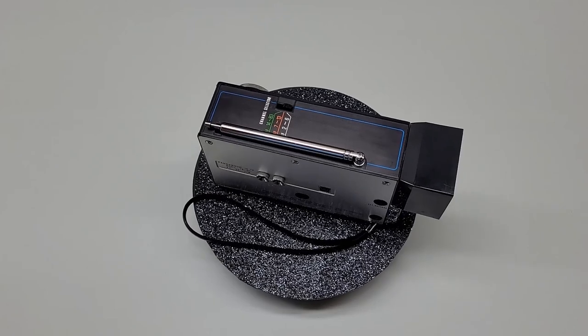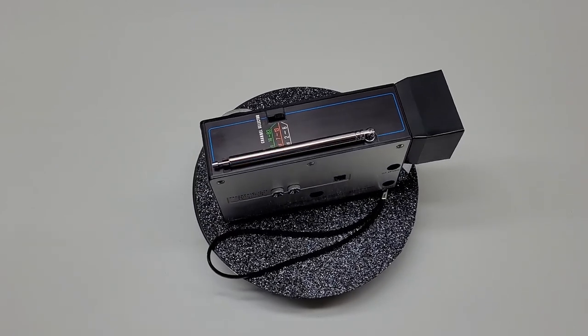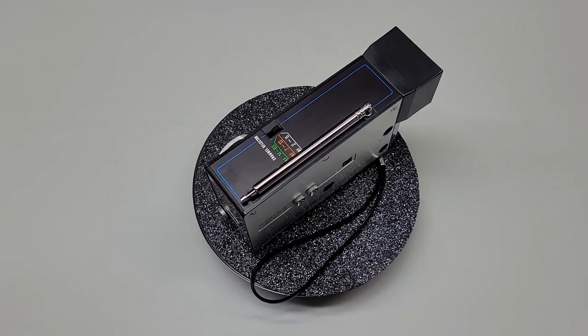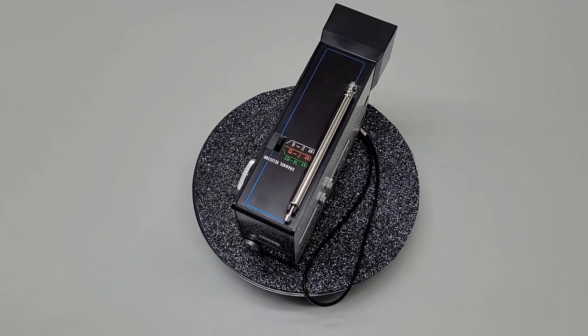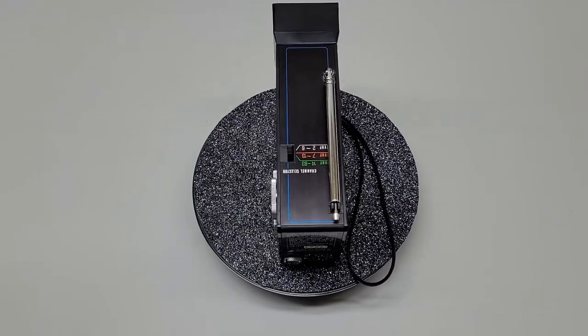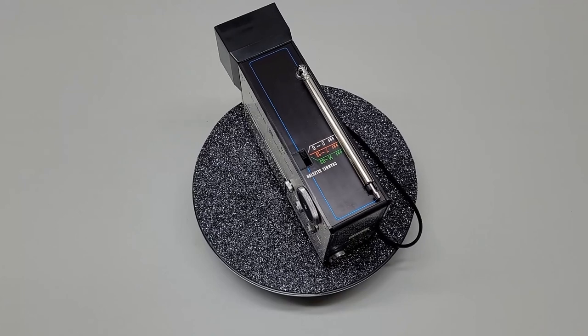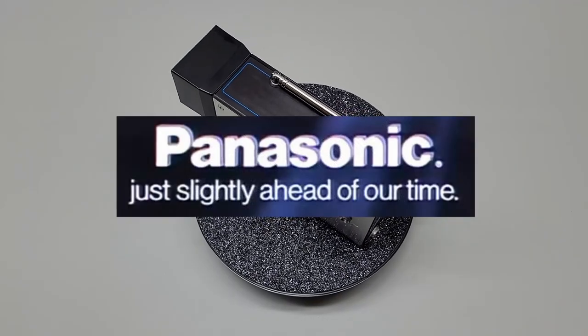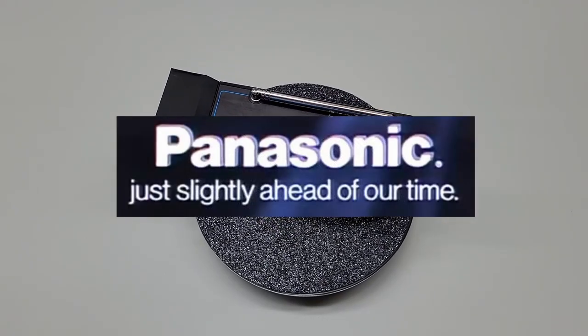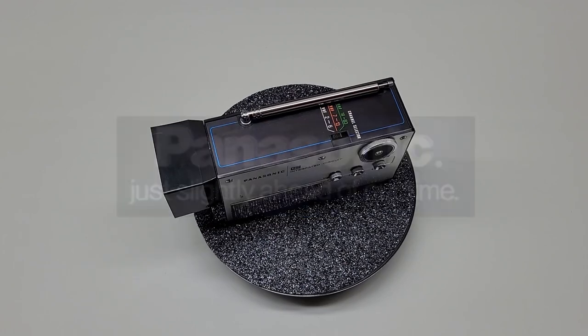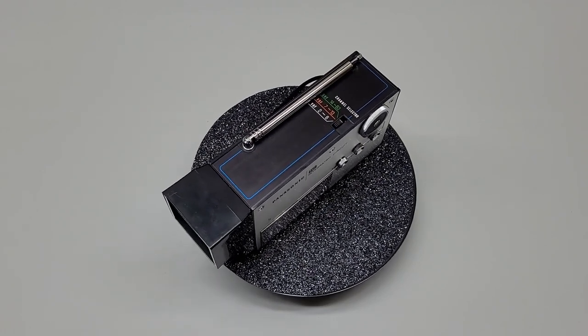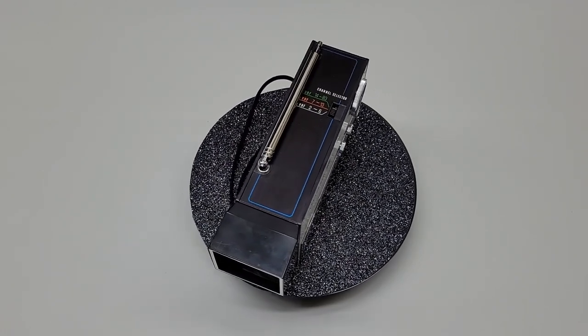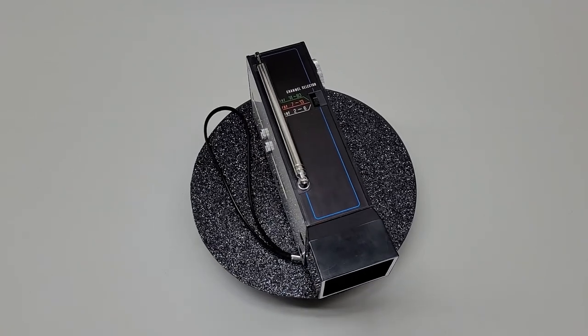This is the Panasonic TR-001 integrated circuit micro television. This came out in 1970 and it's the first pocket-sized television that was ever made to the public. It has a one and a half inch picture. It was the world's smallest television. Panasonic was definitely going by their motto of 'just slightly ahead of our time.' Pretty cool thing that they really put something like this out 53 years ago.